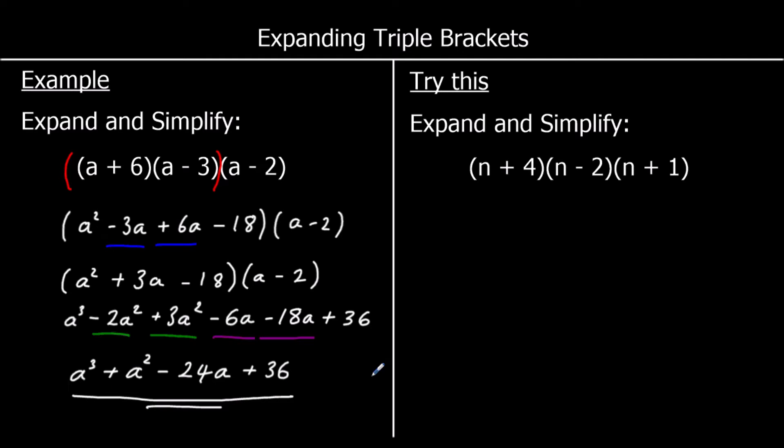A question for you to try — so pause the video, give it a go, and press play when you're ready for the answer. So we're going to start by expanding and simplifying the first two brackets. We've got (n + 4)(n - 2) to start with.